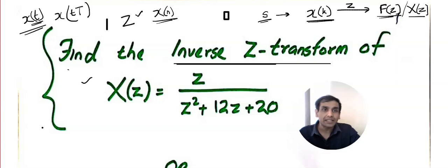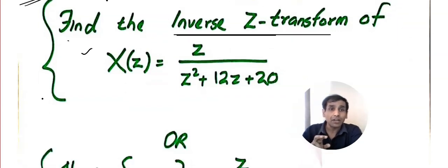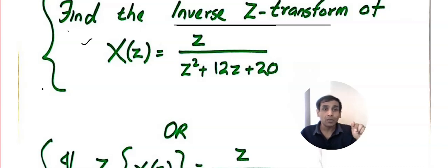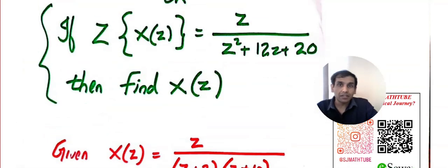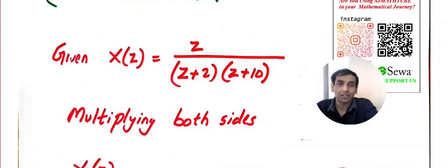So we have to find the inverse z-transform and we will learn three methods. Method number one, partial fraction in this video. And in another video, we will learn a very powerful method that is the residue method. So this is another way in which they can ask. They will give you z-transform is this, find x of k. So basically the same thing.